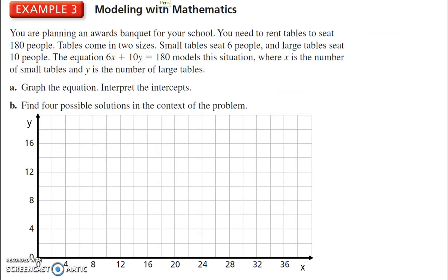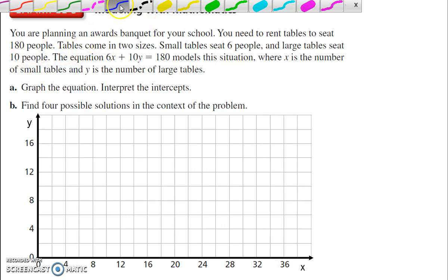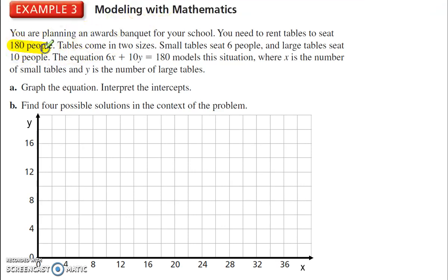You're planning an awards banquet for your school. You need to rent tables to seat 180 people. Tables come in two sizes. Small tables seat 6 people. Large tables seat 10 people. The equation 6x plus 10y equals 180 models this situation, where x is the number of small tables and y is large tables. Graph the equation.